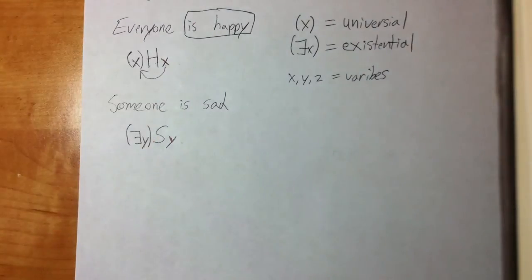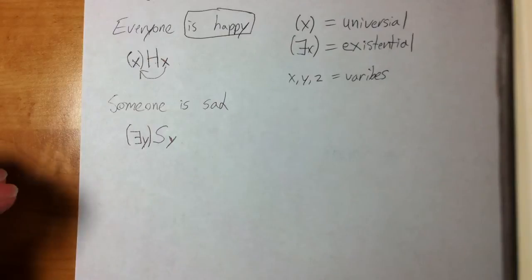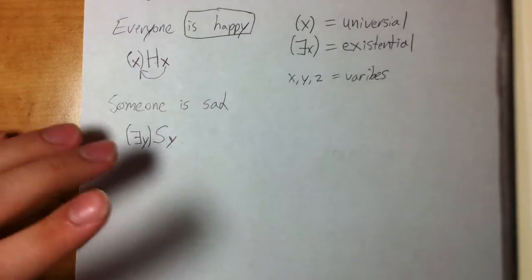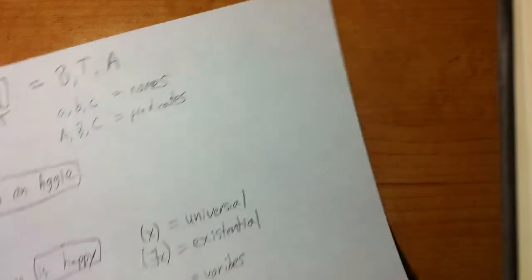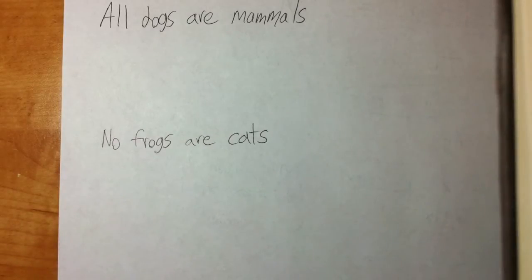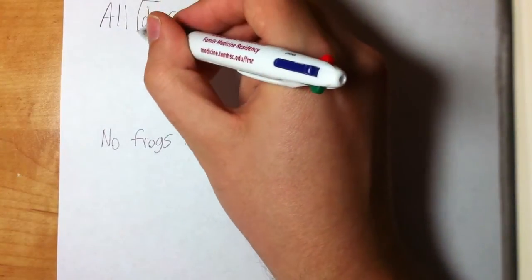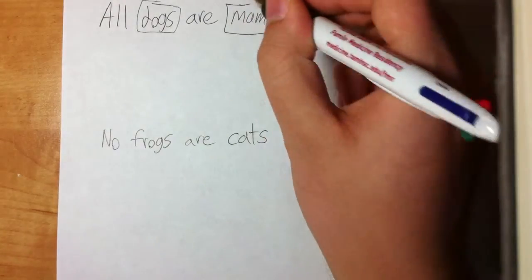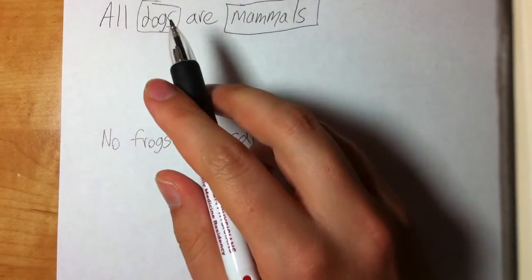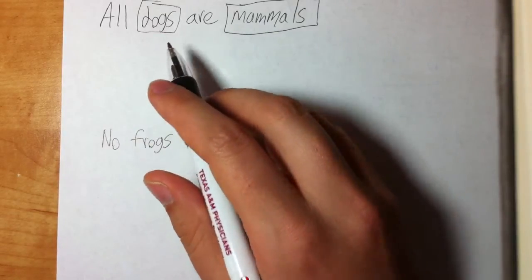Now let's talk about some more complex sentences. You may remember from the first test the AEIO forms — universal affirmative, particular negative, and so on. Those are back again. To step things up, we're going to quantify A, E, I, and O statements. Let's start with: 'All dogs are mammals.' The first thing we do is identify our predicates. Dogs and mammals are nouns but they are not names — there's nobody named 'dog' or 'mammal.' These are individual categories of things.